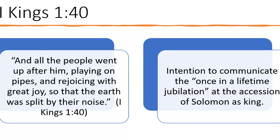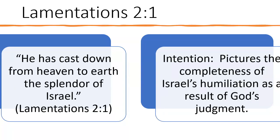This is from Lamentations 2:1: 'He has cast down from heaven to earth the splendor of Israel.' You see the distance — the whole of the splendor of Israel has been cast down in that incredible merism, all the way from heaven to earth. The intention is to picture the completeness of Israel's humiliation because of God's judgment. Because they didn't obey, God cast them down in utter humiliation.